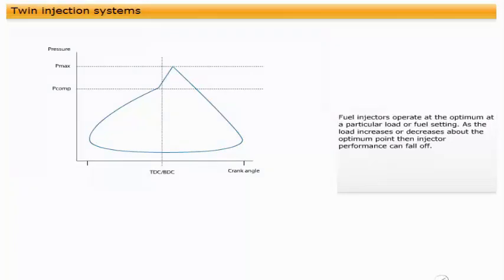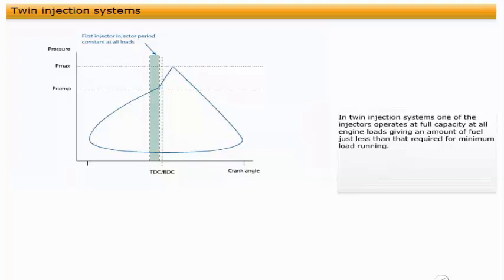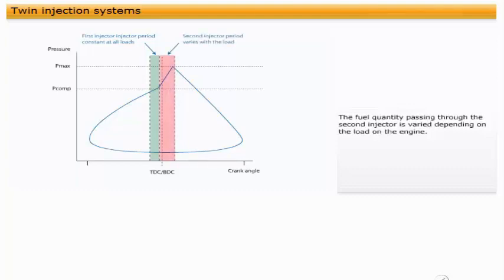Fuel injectors operate at the optimum at a particular load or fuel setting. As the load increases or decreases about the optimum point, then injector performance can fall off. In twin injection systems, one of the injectors operates at full capacity at all engine loads, giving an amount of fuel just less than that required for minimum load running. The fuel quantity passing through the second injector is varied depending on the load on the engine.